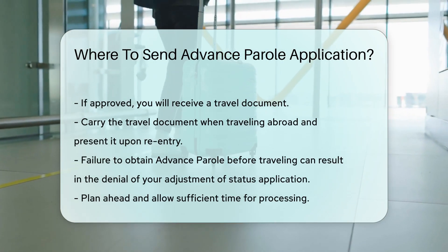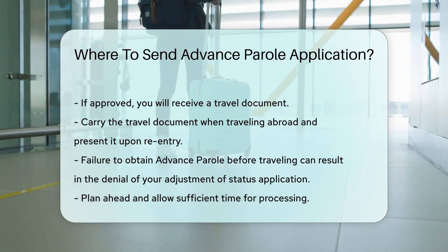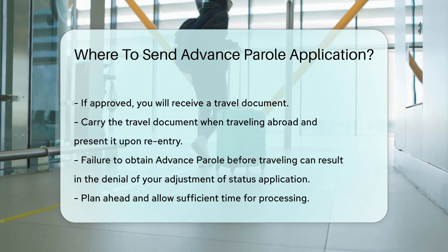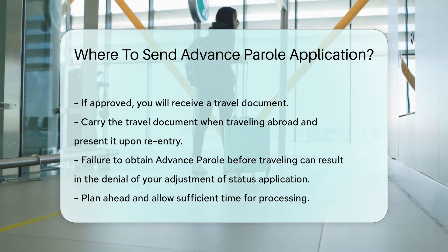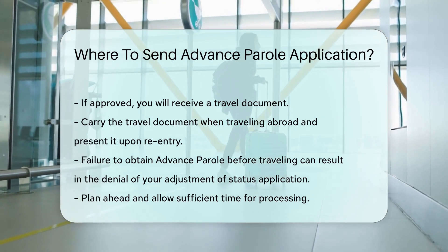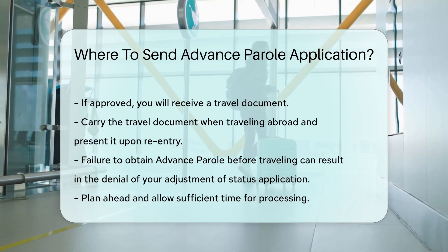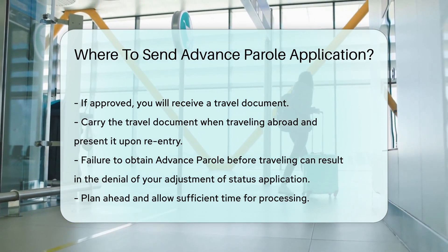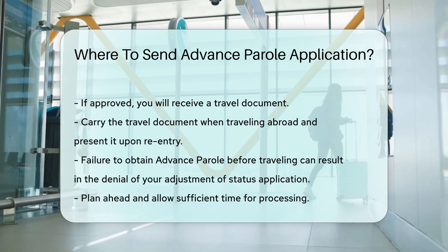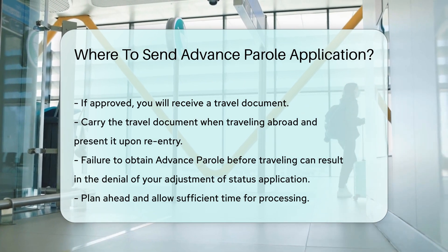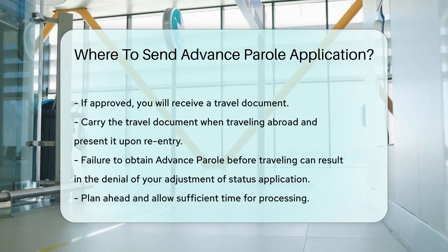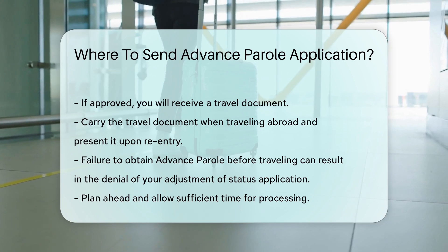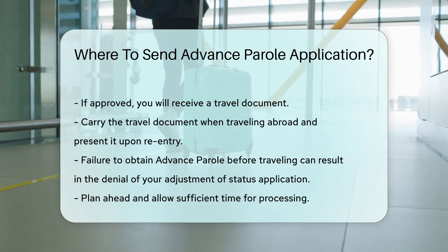If your advance parole application is approved, you will receive a travel document. Carry this document with you when traveling abroad and present it upon re-entry to the United States. Failure to obtain advance parole before traveling can result in the denial of your adjustment of status application. Always plan ahead and allow sufficient time for processing.